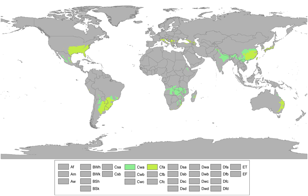In North America, humid subtropical climates are found exclusively in the American Gulf and East Coast states, including the eastern half of Texas, Oklahoma, Louisiana, Arkansas, Alabama, Mississippi, Tennessee, Kentucky, North Carolina, South Carolina, Georgia, and northern Florida. These areas have CWA climates featuring a dry, mild to warm winter season with hot, wet summers. On the Florida peninsula, the humid subtropical climate gives way to the tropical climate of South Florida and the Florida Keys.